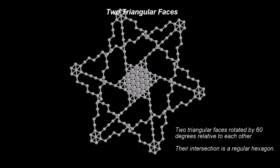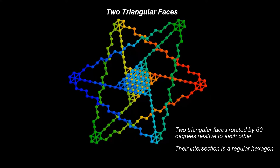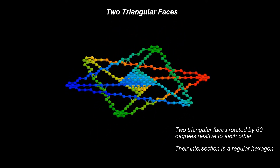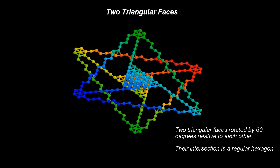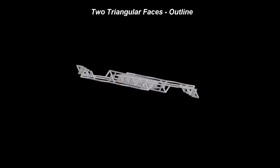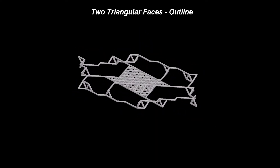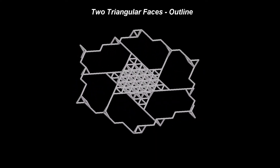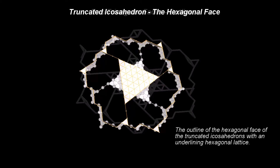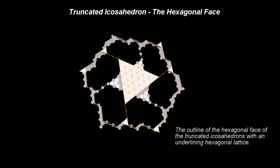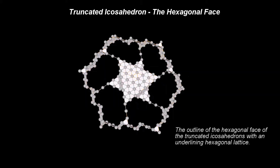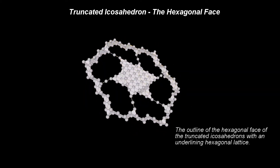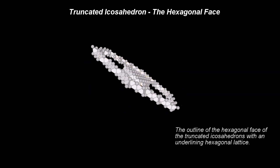Let us consider two such triangles, rotated by 60 degrees relative to each other. As we can see, the overlapped nodes form a regular hexagon. These hexagons are in fact the hexagons of the truncated Icosahedron.